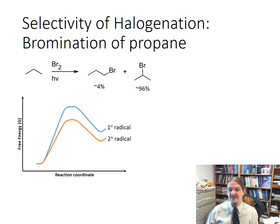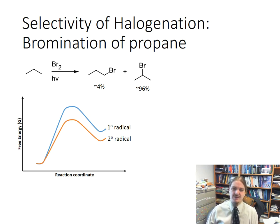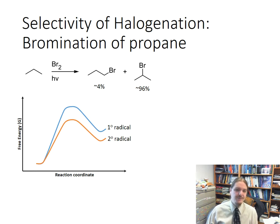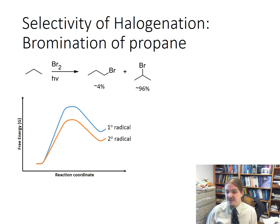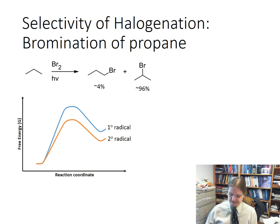The answer also lies in the energy diagram. While the energy difference between the two radicals is the same as in the chlorine case, the difference in their activation energies is larger for bromine. The reaction with bromine is endothermic in its first step, and endothermic reactions tend to be a little bit slower. The difference in rate of formation between primary and secondary is larger for bromine than for chlorine, so you get more selectivity.